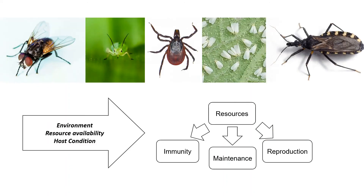What these experiments highlight more broadly is that we need to think about these changes in feeding behavior in a similar way that we do other infection phenotypes — which is that in many cases there are important roles for both the pathogen and the vector host. By doing this, I think we can gain better insight into the mechanistic basis and the eco-evolutionary dynamics of these behaviors.